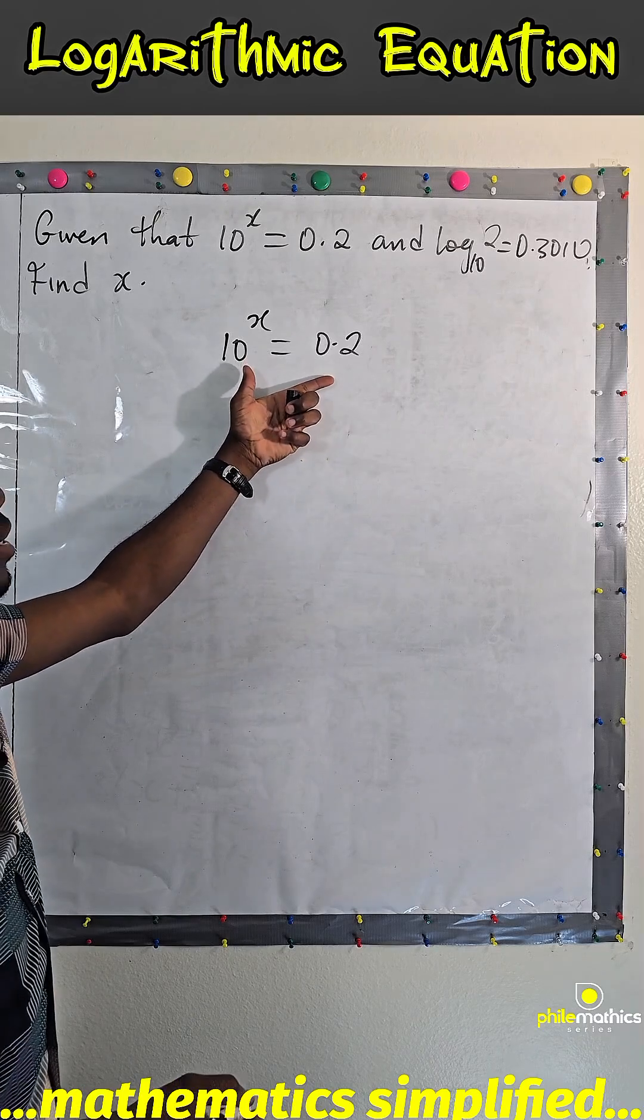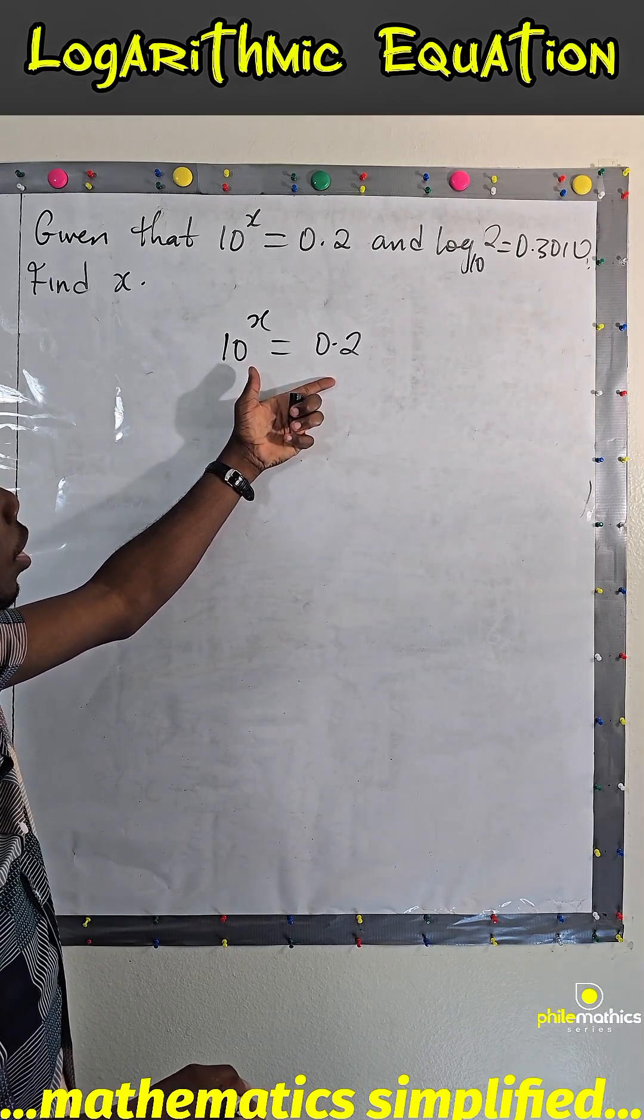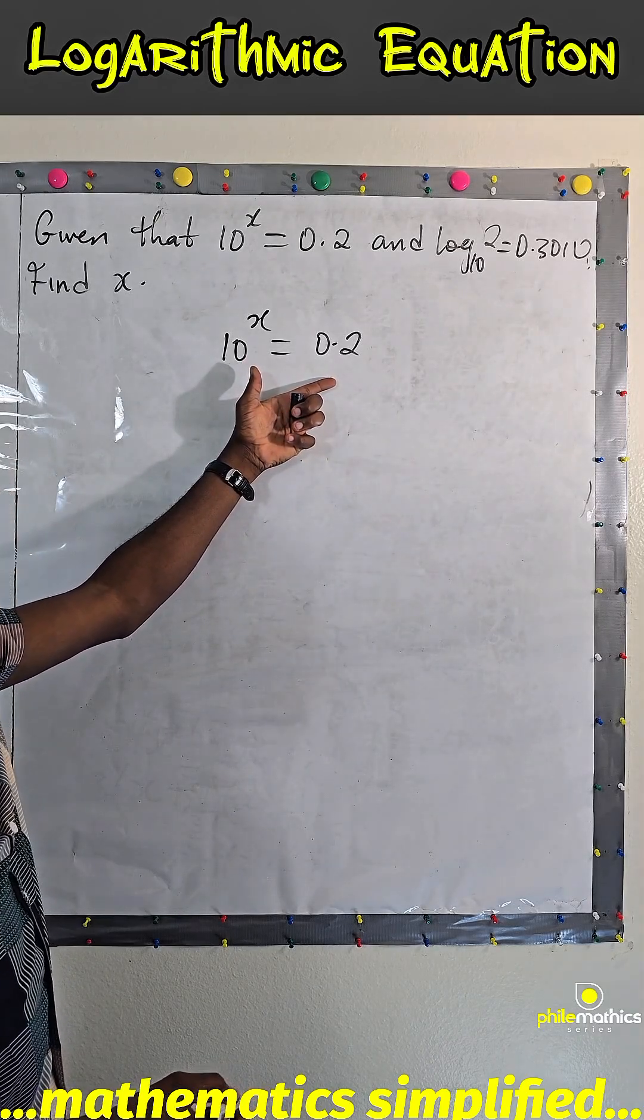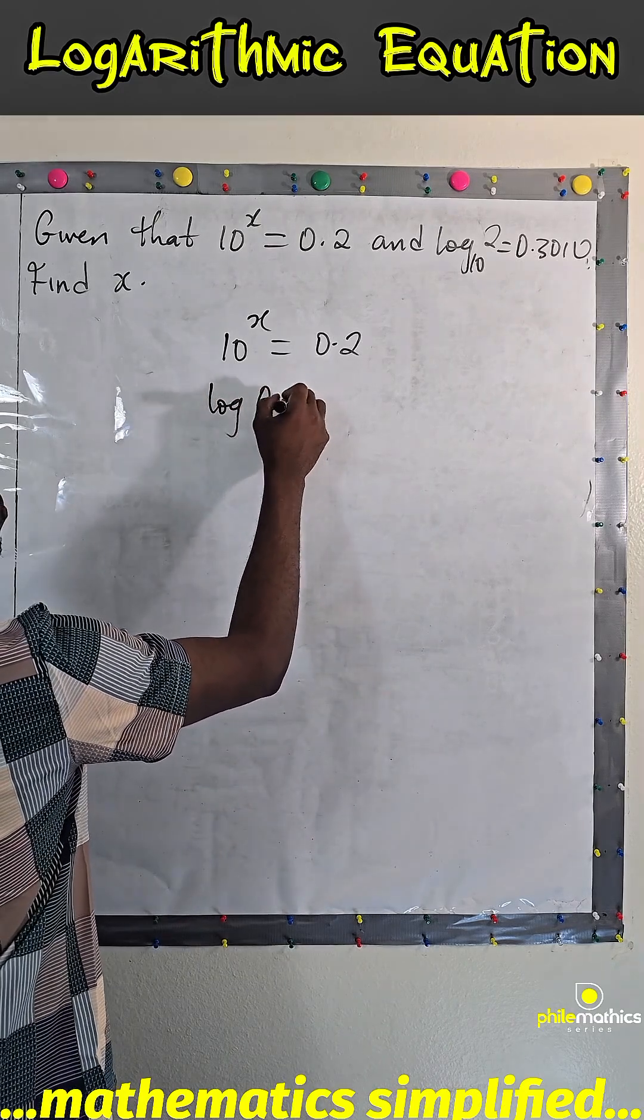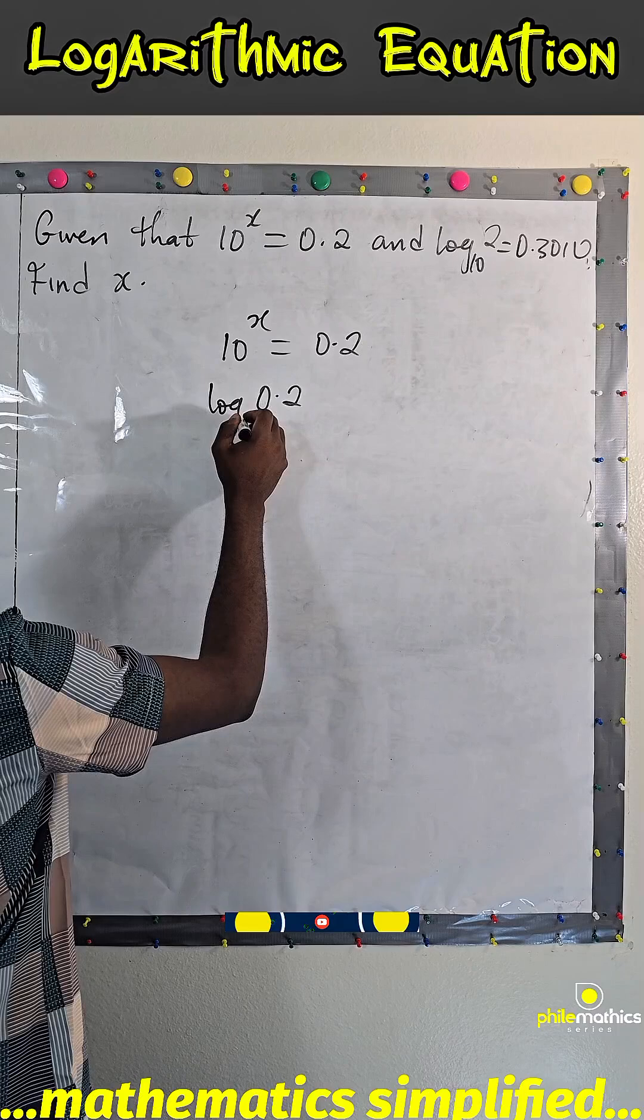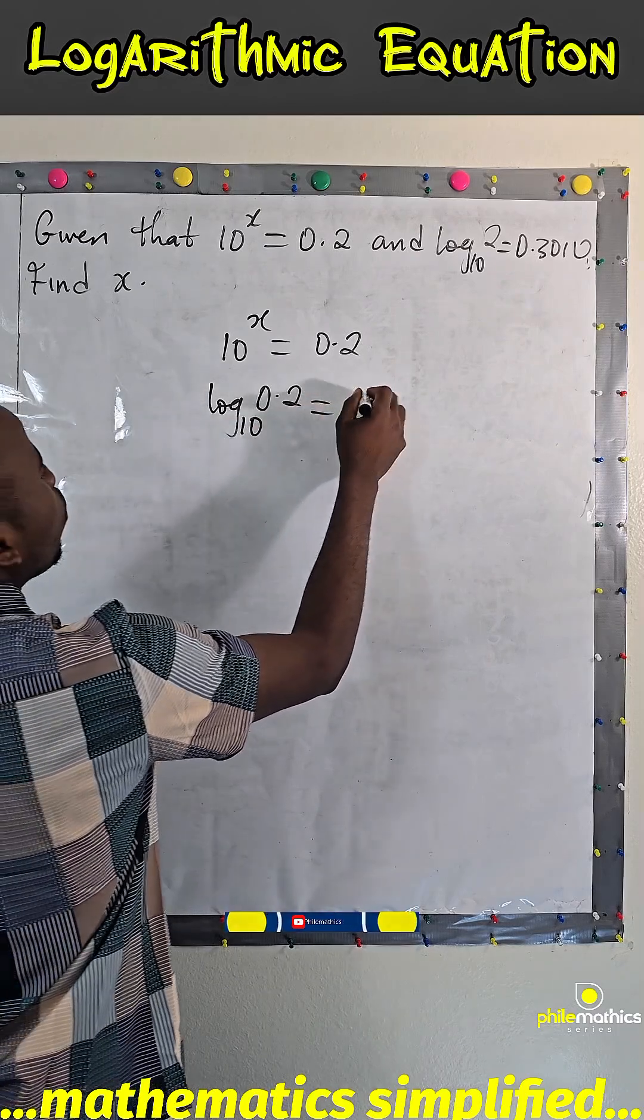This is in index form. Now, first, to convert this to log form, this should be log 0.2 to base 10 equals x.